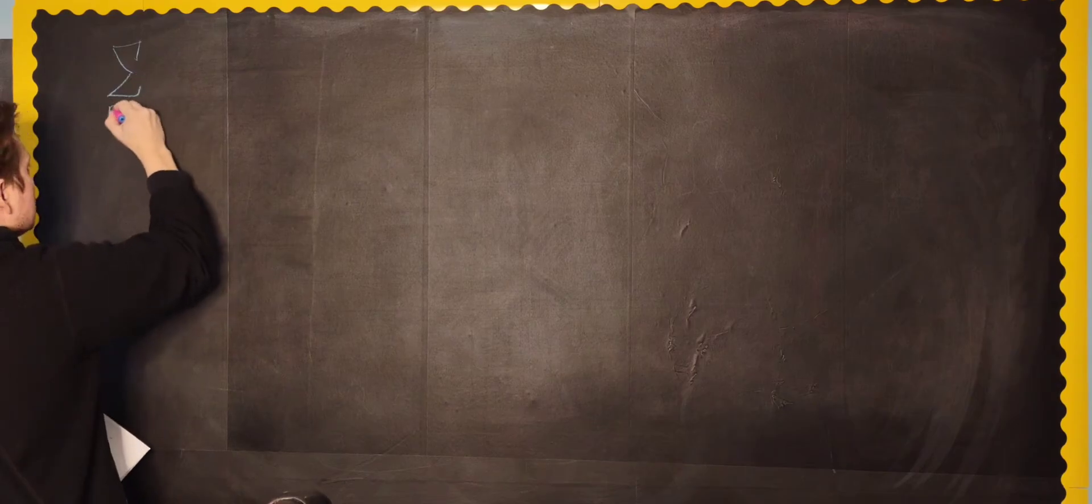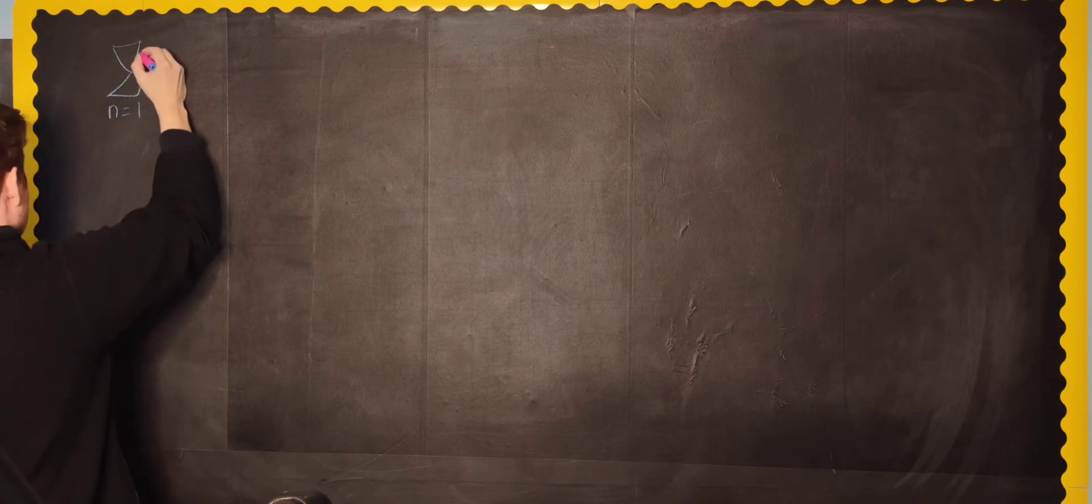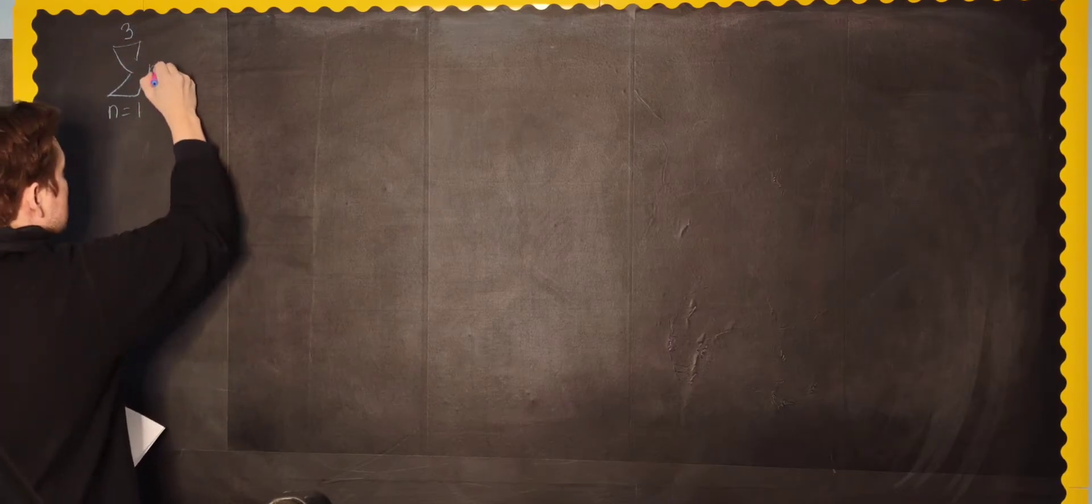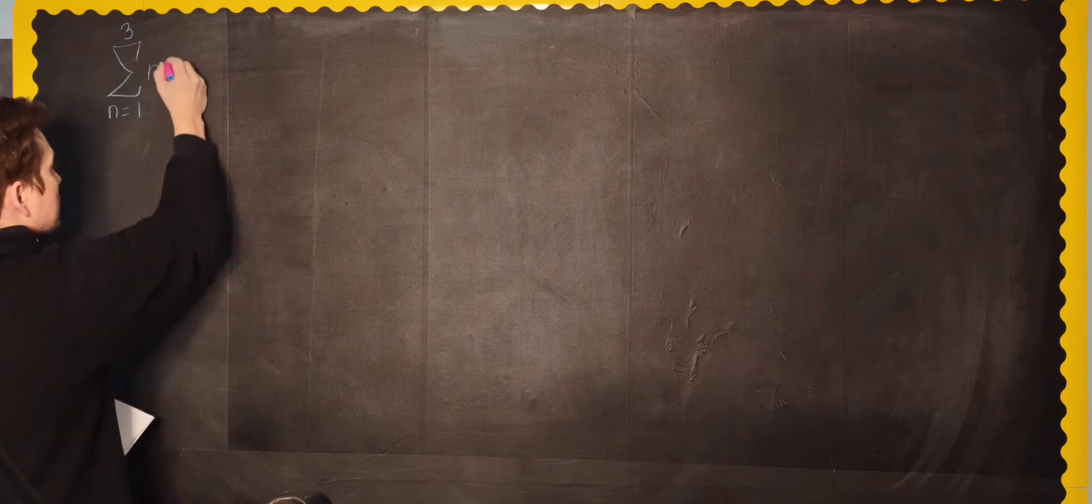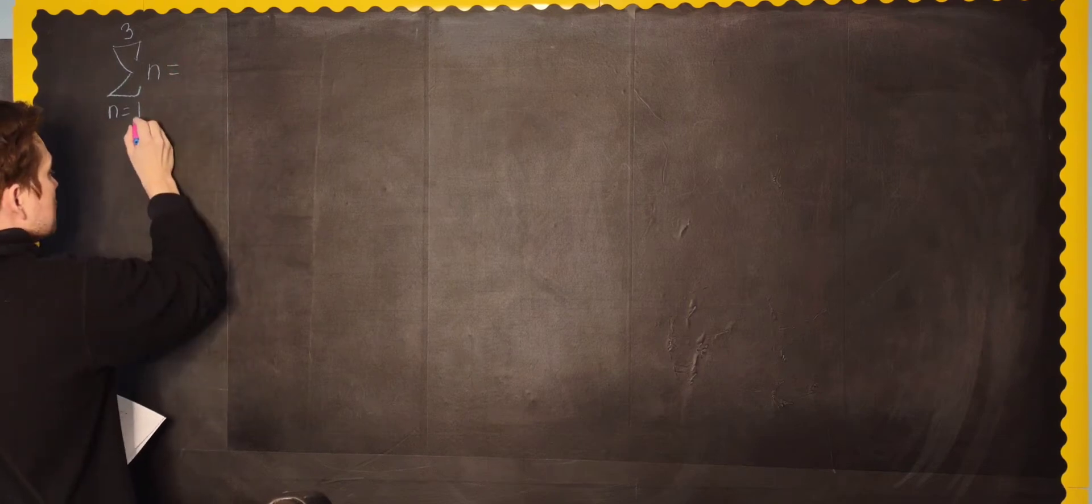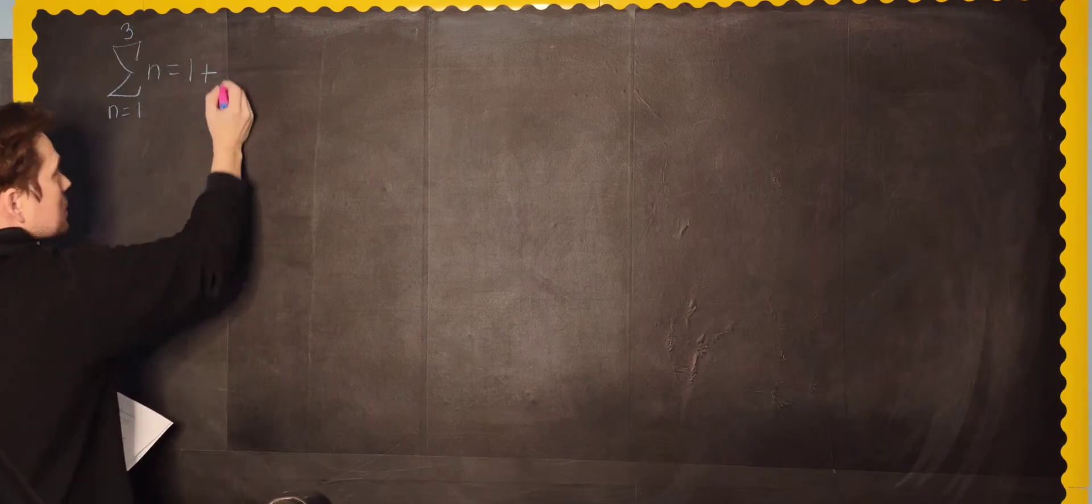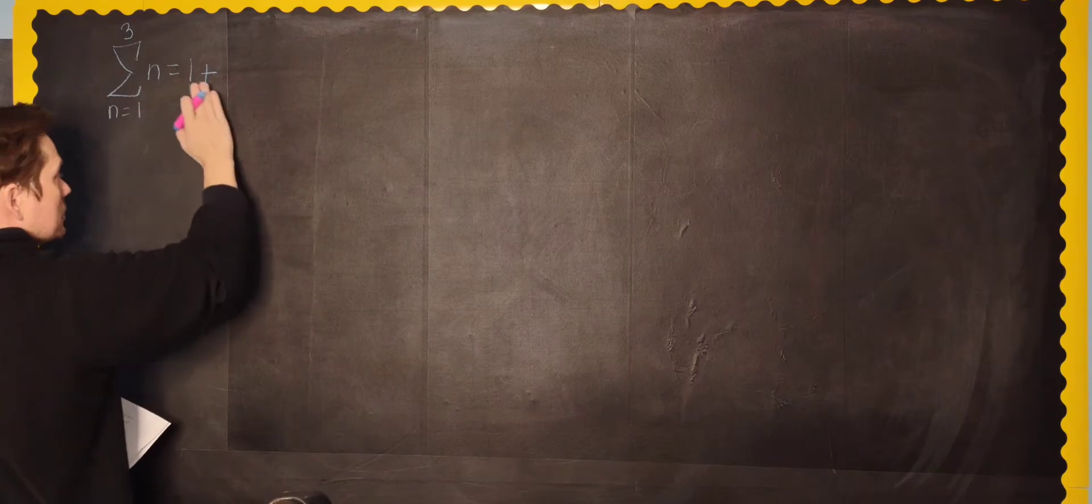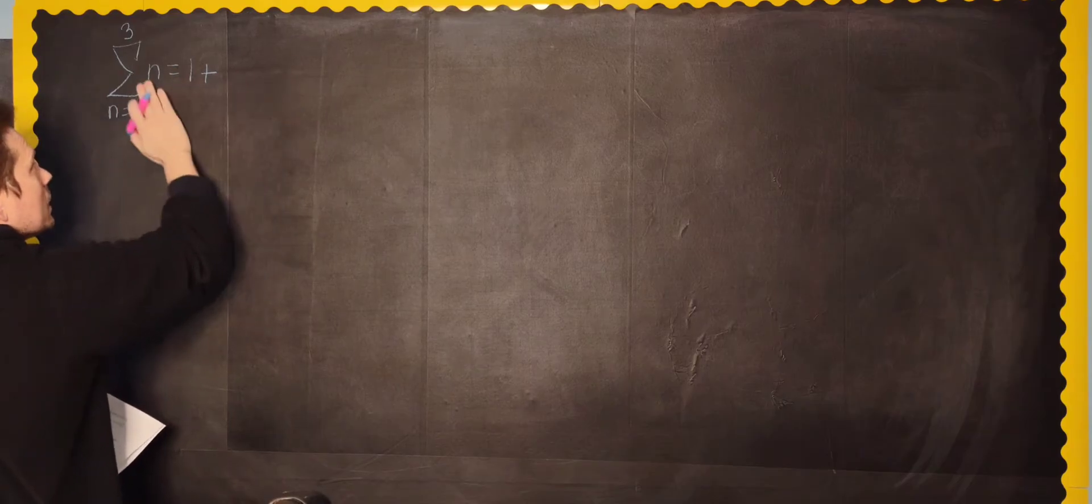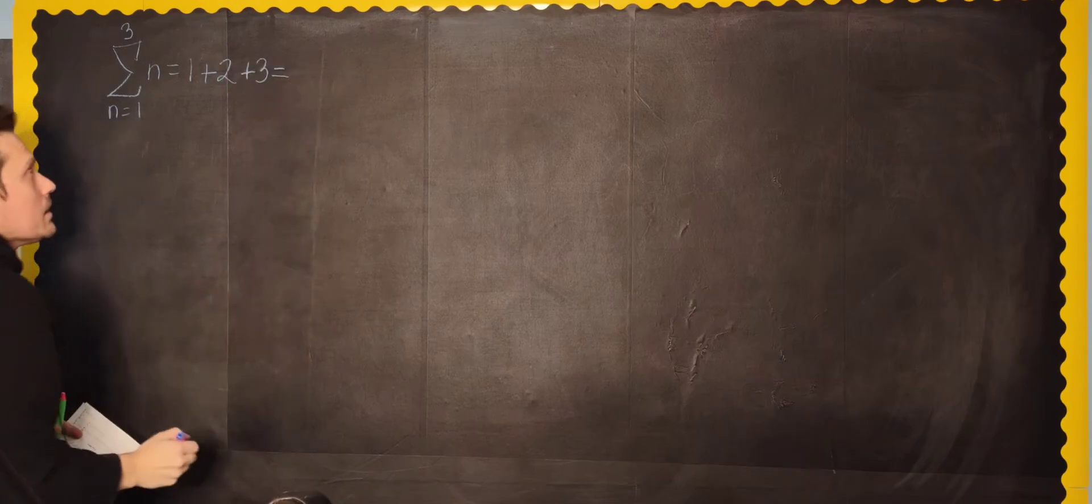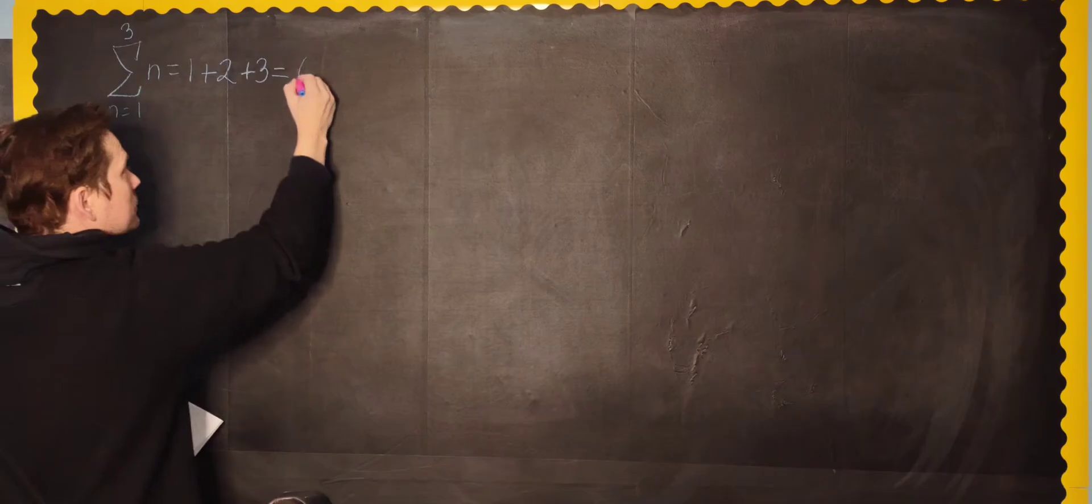So take a look. I'm just going to go with a couple relatively simple examples. Imagine you have the summation here, and I'm going to go from n equals 1 to, for the sake of simplicity, just make this 3, only 3. Simple. And then imagine this is n.